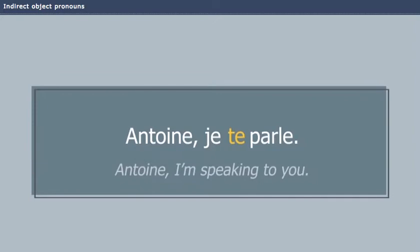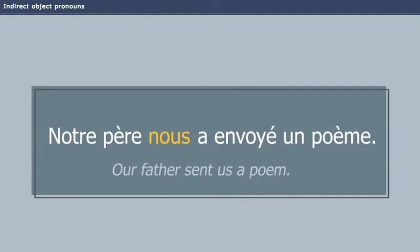The indirect object pronoun usually comes before the conjugated verb. Antoine, je te parle. Notre père nous a envoyé un poème.